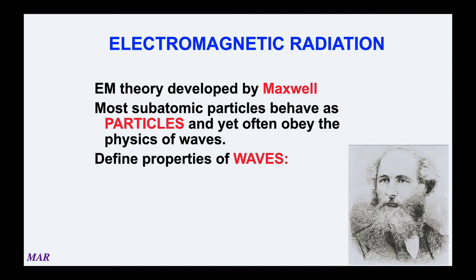Maxwell was the one who really developed a lot of the theory behind electromagnetic radiation. Interestingly, particles like electrons will behave like waves, so we're going to use the knowledge of waves to understand more about electron particles. Waves have a wavelength — the distance from where the wave starts to where it stops — which gets the symbol lambda and is truly a length, measured in meters, centimeters, micrometers, or nanometers.